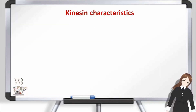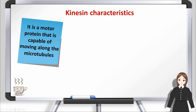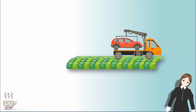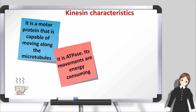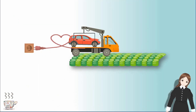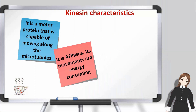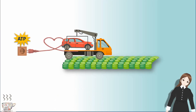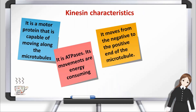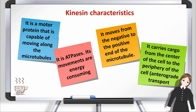Kinesin characteristics. It is a motor protein that is capable of moving along the microtubules. It is ATPase, and its movements are energy consuming. It moves from the negative to the positive end of the microtubule. It carries cargo from the center of the cell to the periphery of the cell — this is anterograde transport.